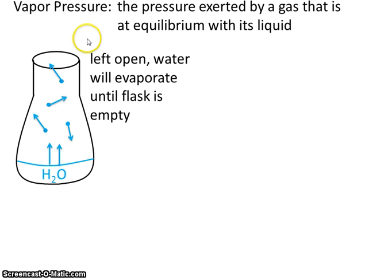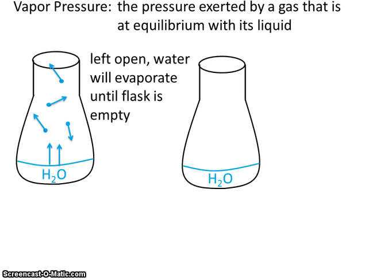Now let's say we have a flask, but this time we decide to place a stopper on the flask. Now what's going to happen in this scenario? Well, just like before, the water begins to evaporate. And it begins to move around. But because this is stoppered, none of these water molecules are able to escape and leave the top.